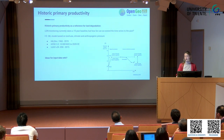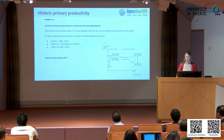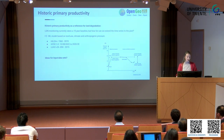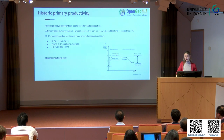Going one step further, we have the idea to also model historic primary productivity. Maybe you go a few years back but you don't capture the full potential — so what if we could go back even further? We still have to figure out how far we can go back. Can we go back to pre-industrial times? The idea is to build a model using land use, climate, and human pressure. If you have ideas for datasets or methods, I highly appreciate any comments.